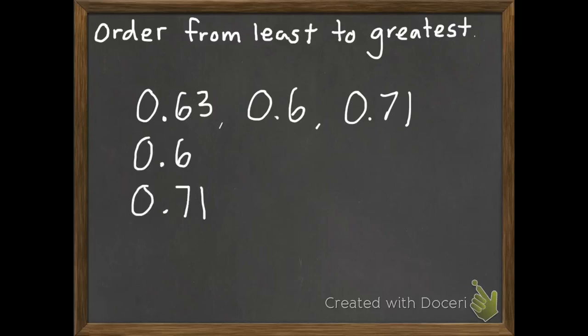This time actually I want to use a different strategy. So I'm going to just write these all on top of each other. So I just moved those, the 6 tenths and the 71 hundredths, and I put them so I kind of made a line up and down instead of sideways. There's lots of different strategies we can use. I'm going to erase those over there so it's not so cluttery.